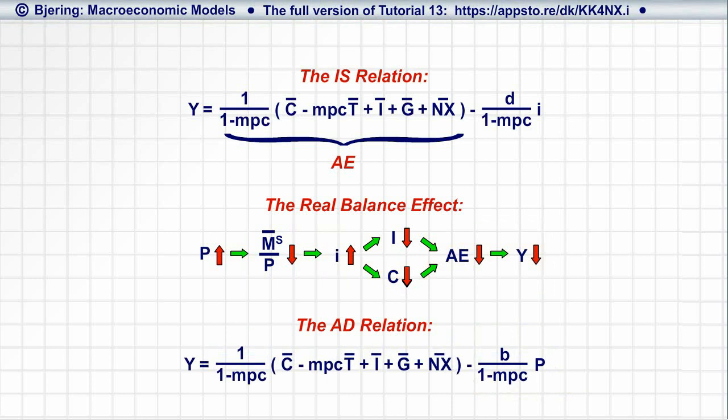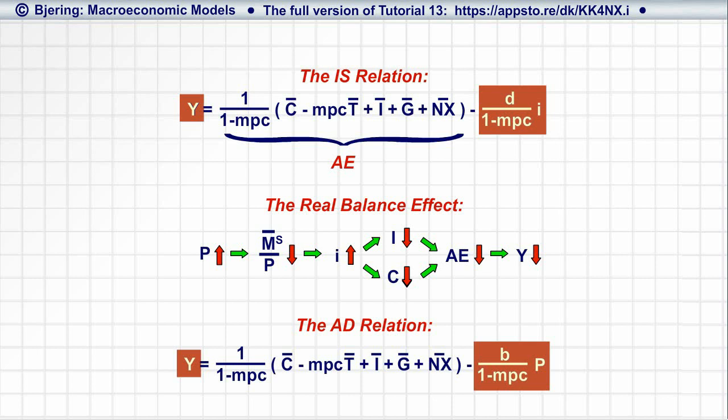Notice that the AD relation is simply the IS relation, where this term has been adjusted to reflect the effect of a change in the price level on equilibrium Y—that is, to reflect the real balance effect.